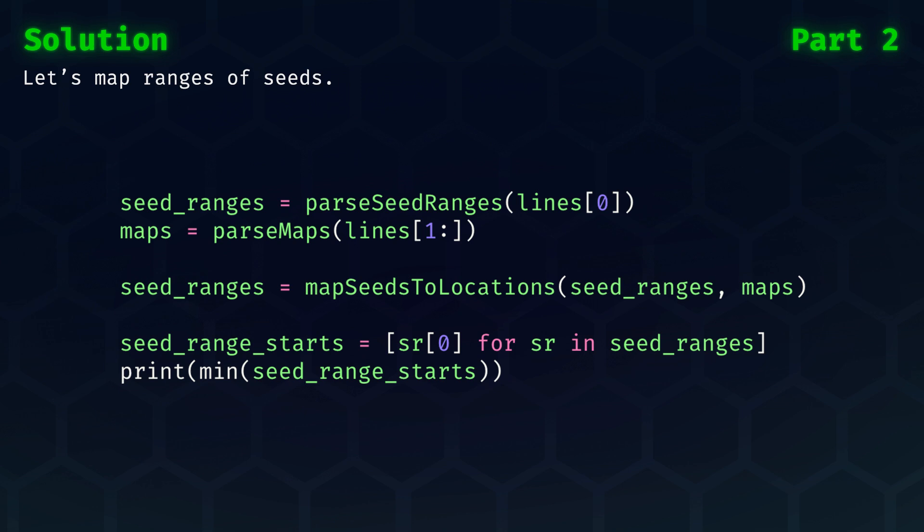The outline of the solution now looks as follows. Instead of parsing seeds, we parse seed ranges. Parsing the maps remains the same. Then we have the main section of logic, which is to map seeds to locations, which updates the seed ranges according to the maps. After we've done this, we can assume we have all ranges, which represent the actual locations of the seeds. We loop over them and we collect the start points of the ranges. The minimum start point is our answer.